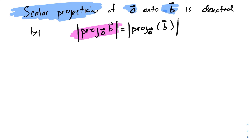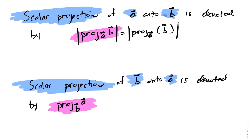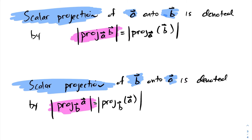Likewise, we can do this for the projection of B onto A. To denote the scalar projection of B onto A, we write: proj (subscript B) acting on A. Again, this can be viewed as a function — the projection of vector B acting on vector A. And again, since we want the scalar projection, we put magnitude symbols on the outside of this function, so now we're talking about the length of that vector. This notation is an easier way to express the scalar projection of a vector onto some other vector.